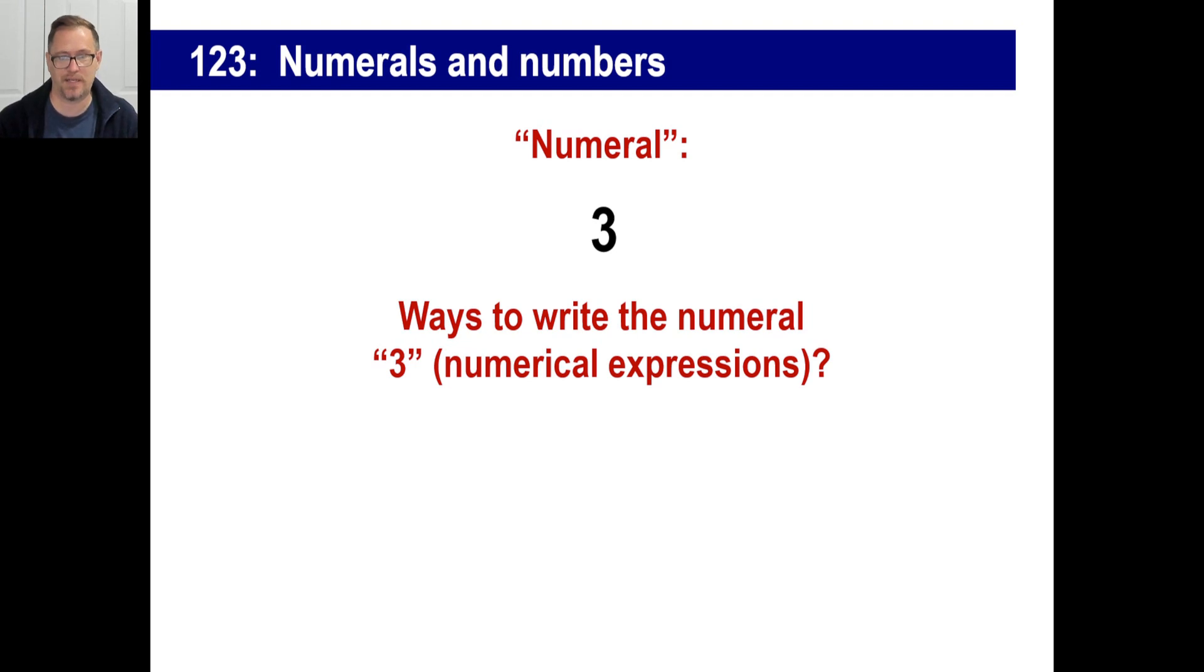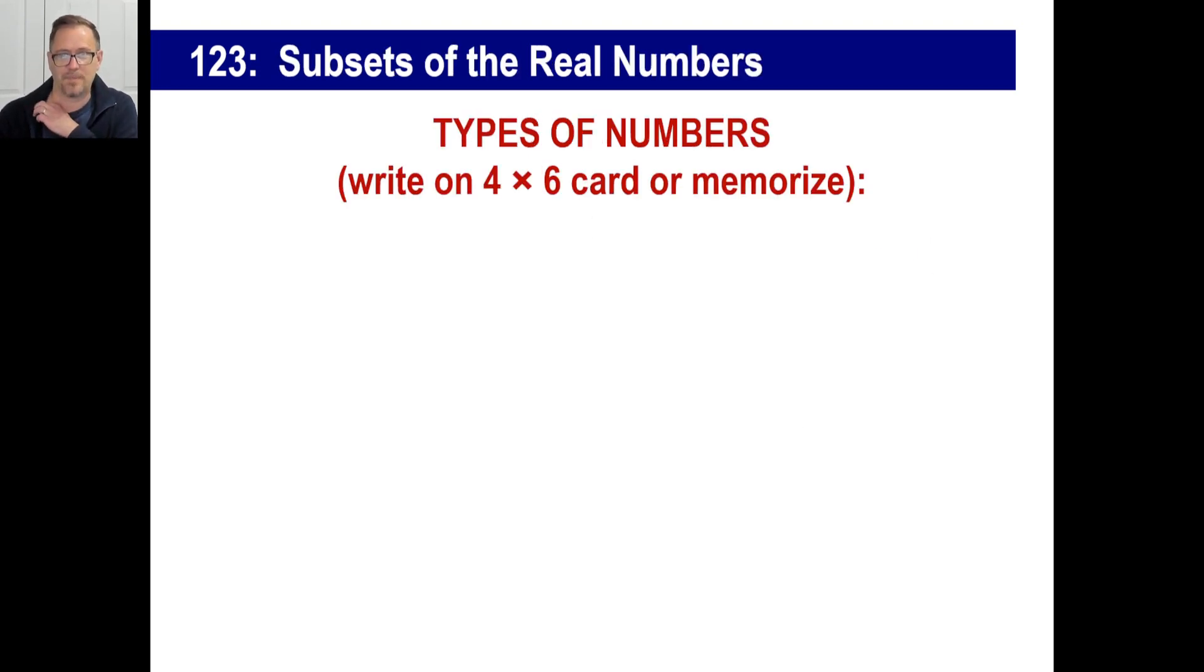Ways you can write the numeral three. I don't know, five minus two, 51 divided by 17, eight minus five, two plus one, all those ways. You can write the numeral three. The types of numbers, you need to memorize these. So write these down on a four by six or three by five card and memorize these. Because next year and in years to come and on standardized tests, they're going to ask you for, give us the set of so-and-so numbers. So just know these numbers. You're going to keep seeing them over and over in Saxon math. So memorize these babies.